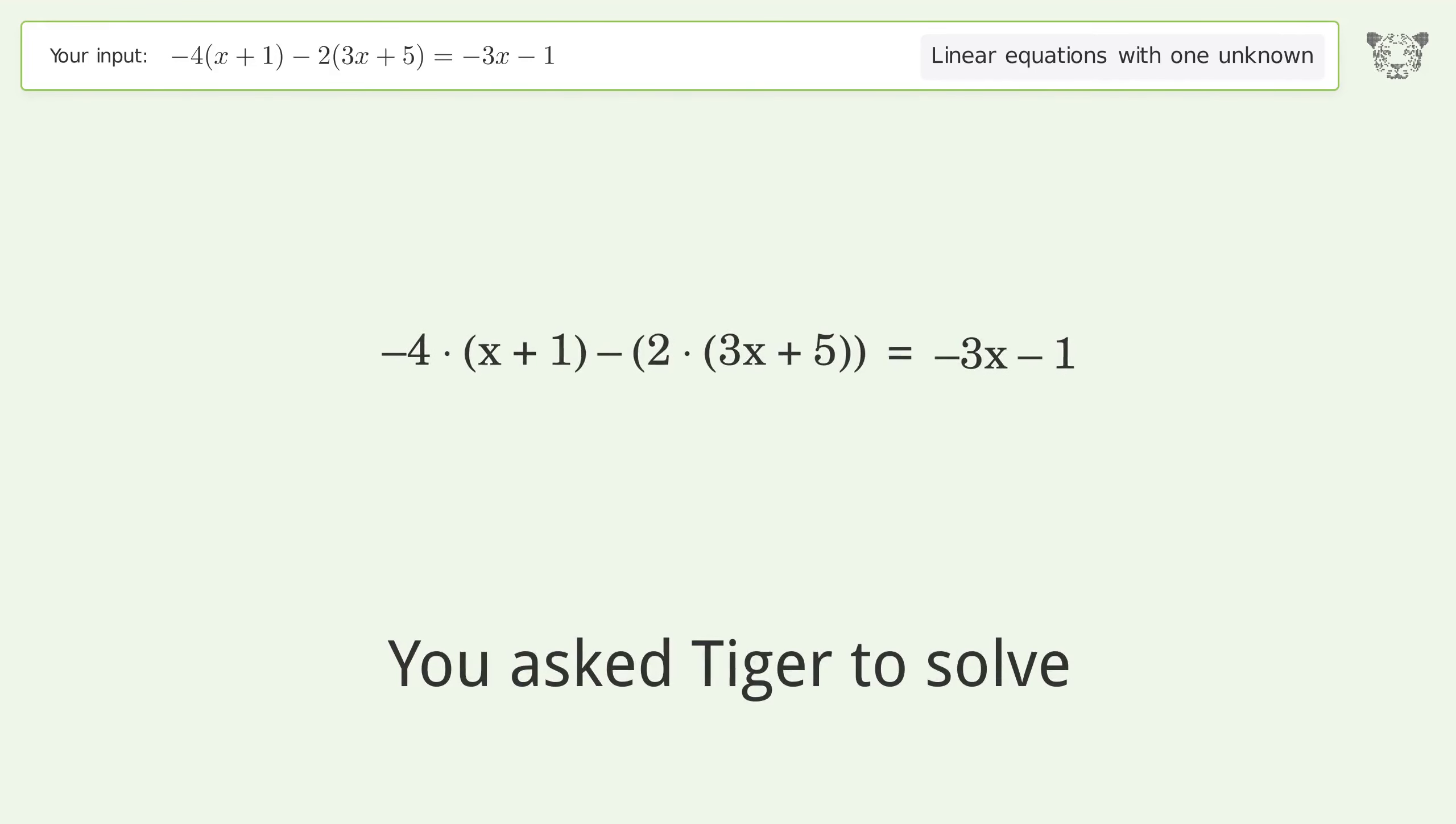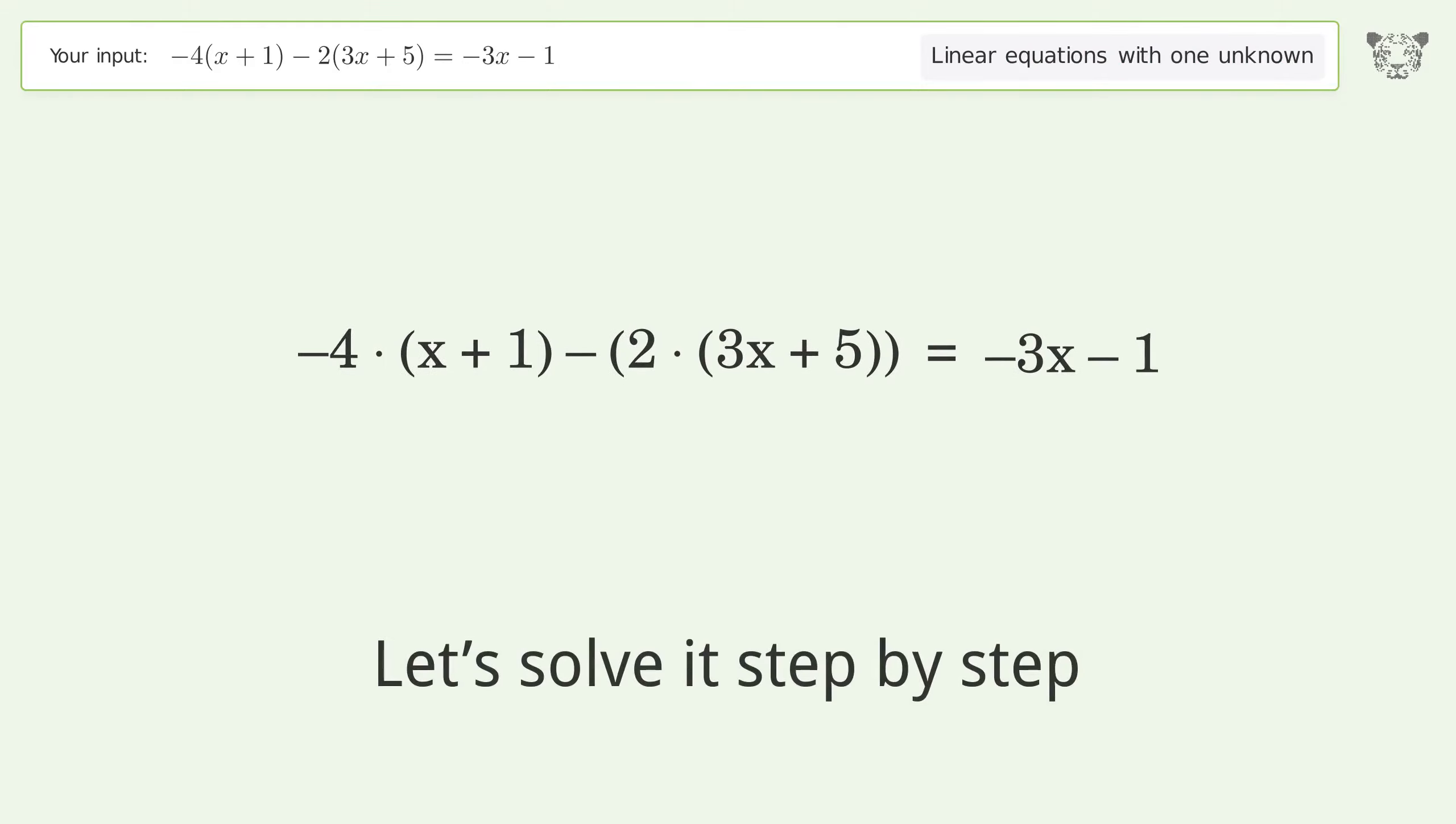You asked Tiger to solve this. It deals with linear equations with one unknown. The final result is x equals negative 13 over 7. Let's solve it step by step.